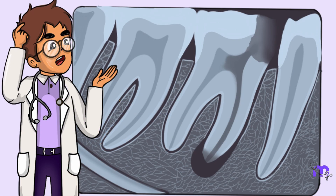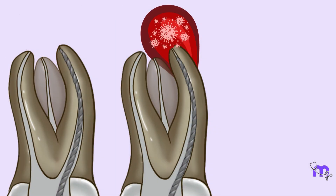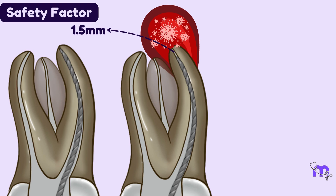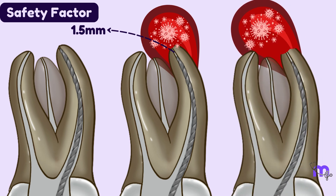If the phenomenon of periapical bone resorption is observed near the root apex, the working length is reduced by 1.5 millimeters from the radiographic apex, as the apical constriction would have been resolved.